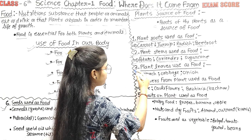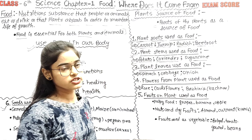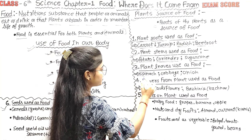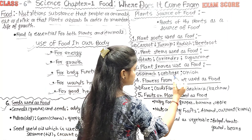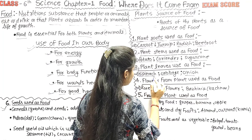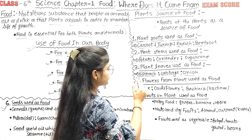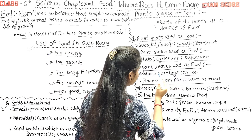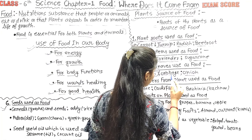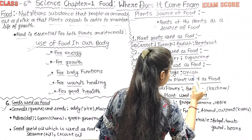The third part is plant leaves used as food. Examples include spinach, cabbage, and onion. Spinach leaves are commonly eaten, along with cabbage, onion, and fenugreek.